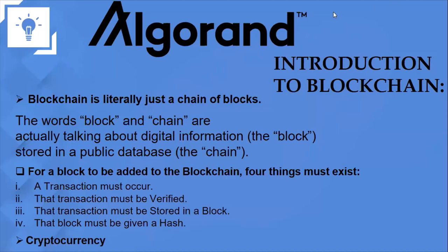When we liken this to the real-life database we are used to — the traditional database — before the advent of blockchain we know that databases existed. The only difference is that the normal database we were used to had a central authority, like an admin, who could decide to manipulate the data available. In the case of blockchain, there is no central authority, no admin somewhere that can manipulate what is going on on the chain.